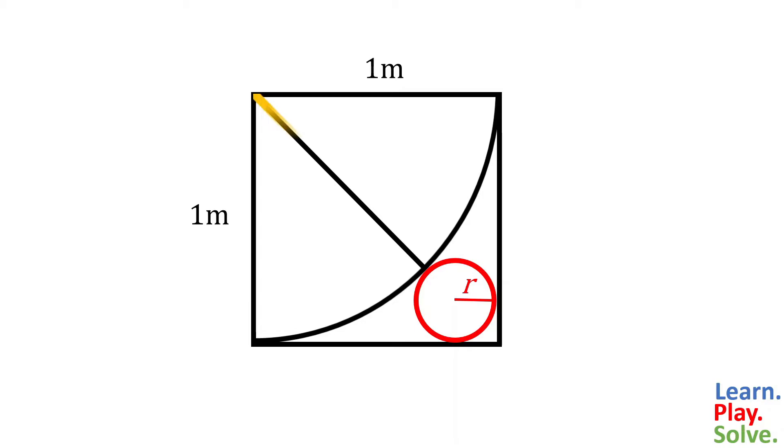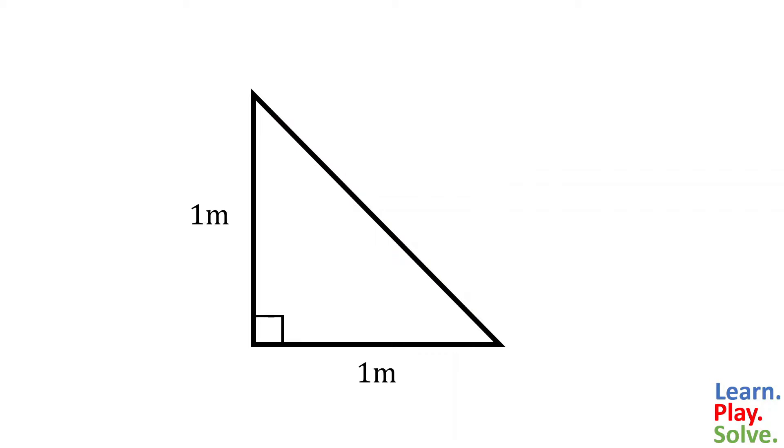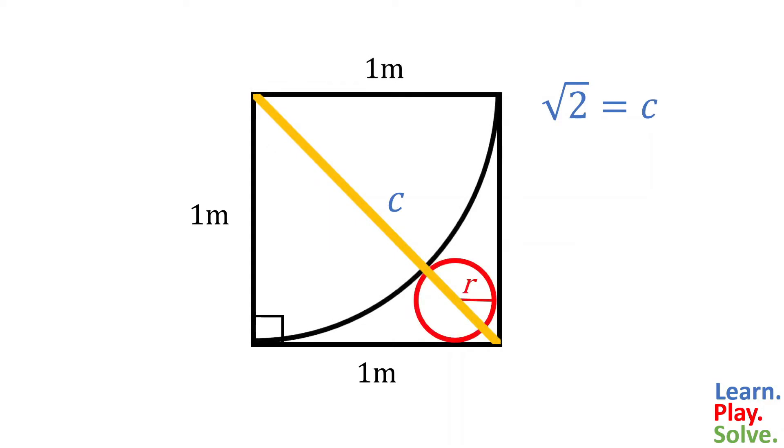Now let's find the diagonal of this whole square. Since that forms a right triangle, we can use the Pythagorean Theorem with the diagonal or the hypotenuse as c. If we plug in the legs of the triangle for a and b, then solve, we get c equals the square root of 2. So the diagonal of this square is the square root of 2.